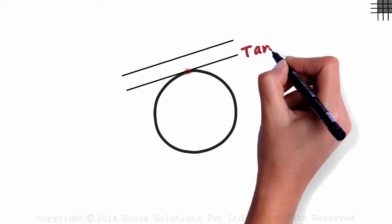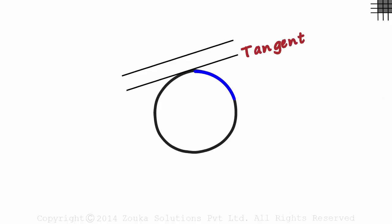Another way is like this, where they meet at exactly one point. Such lines are called tangents. A line which meets a circle at exactly one point is called a tangent.